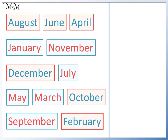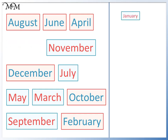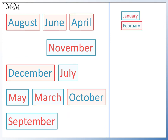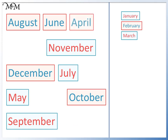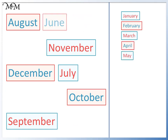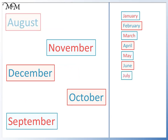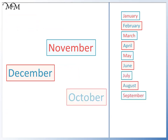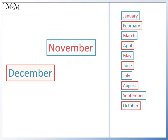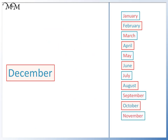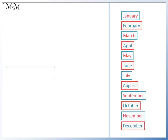First we have January, February, March, April, May, June, July, August, September, October, November and December.